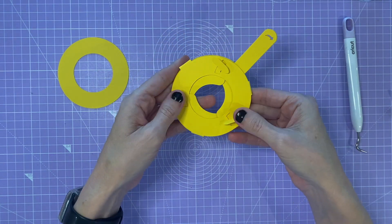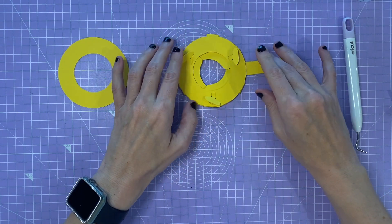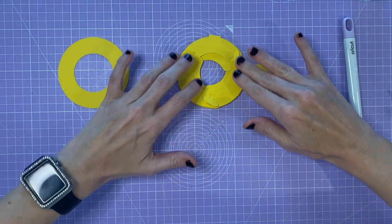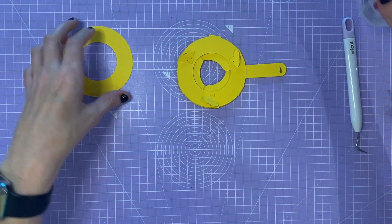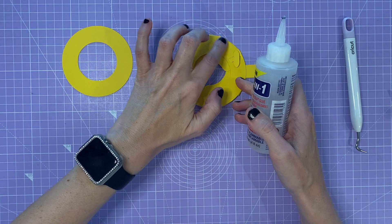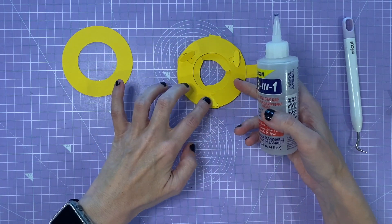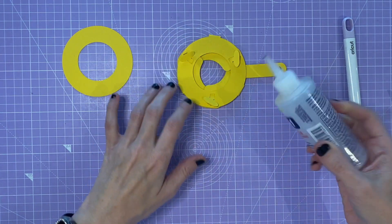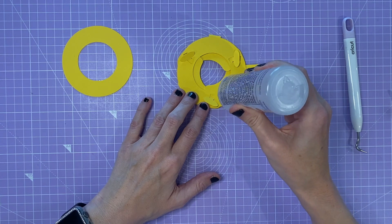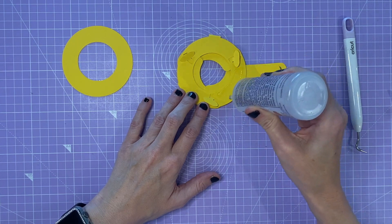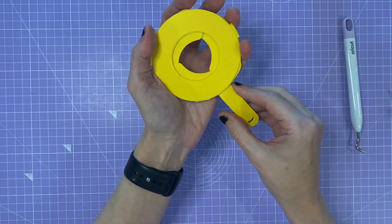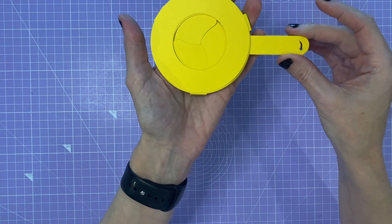Once you've turned it over you then need to attach the final circle. Again, glue just in this area, avoid these moving parts and the handle. And that is the finished iris shutter.